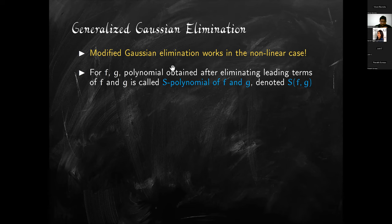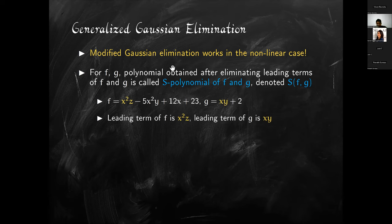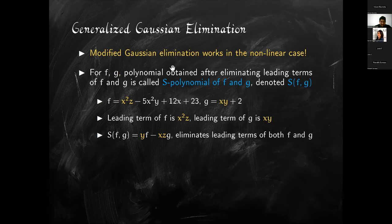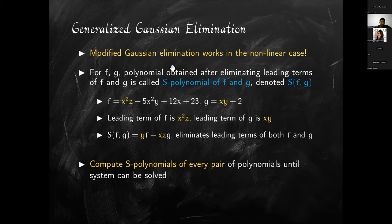Let's do another example to make the S-polynomial concept clear. We have two polynomials F and G. The leading term of F is x²z and the leading term of G is xy. To make the leading terms match, we multiply F by y — making its leading term x²yz — and multiply G by xz, also giving leading term x²yz. When we subtract, this eliminates the leading term of both F and G.